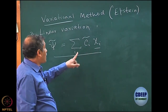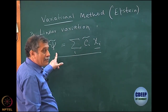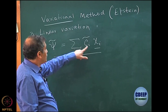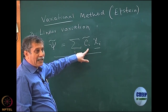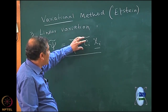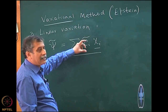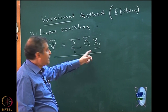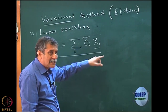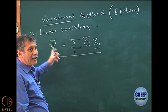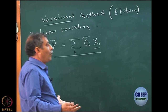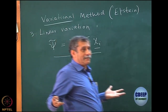What are my trial parameters? c_i tilde. Basically, what I am doing is changing this c_i tilde in a known basis and generating different psi tilde, and then seeing what happens.